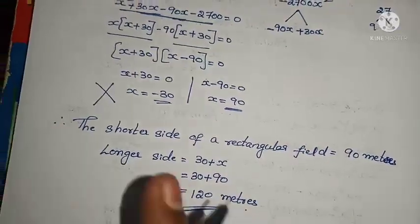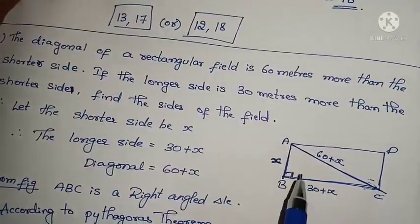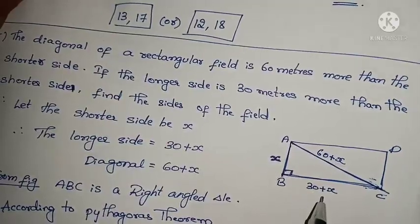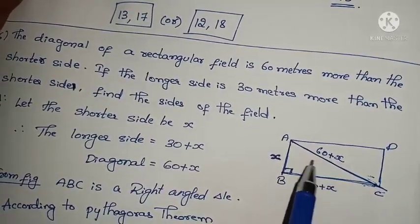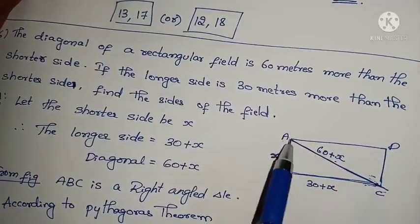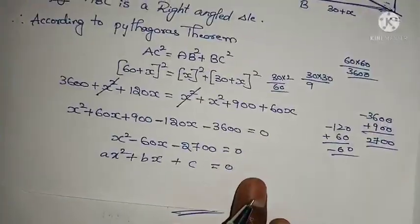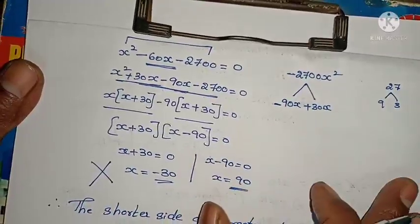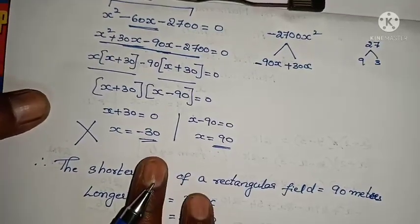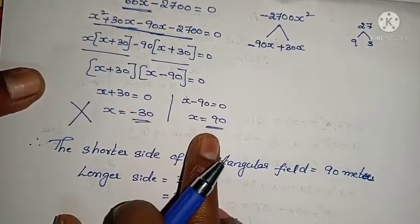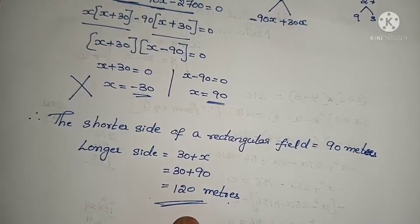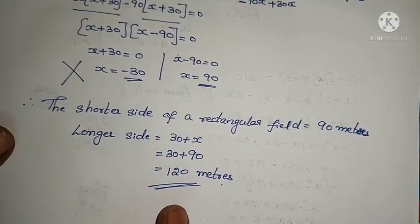To summarize: I took shorter side as X, longer side as 30 plus X, and diagonal as 60 plus X. By Pythagoras theorem, AC squared equals AB squared plus BC squared. After solving I got the quadratic equation X squared minus 60X minus 2700 equals 0. Using factorization I got two values; the negative value is rejected since length cannot be negative. So shorter side is 90 meters and longer side is 120 meters.